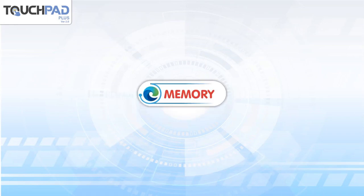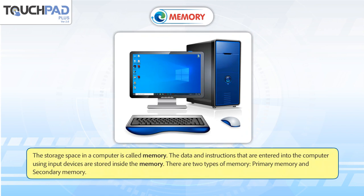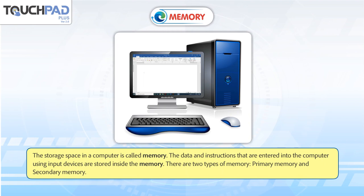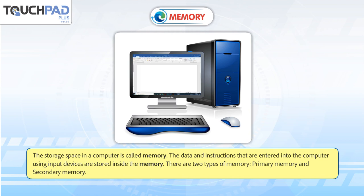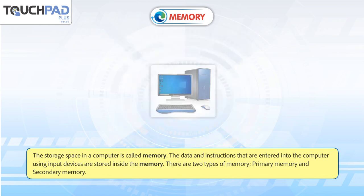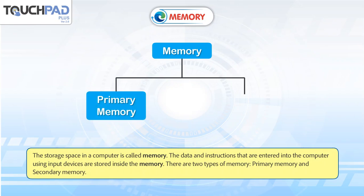Memory. The storage space in a computer is called memory. The data and instructions that are entered into the computer using input devices are stored inside the memory. There are two types of memory: primary memory and secondary memory.